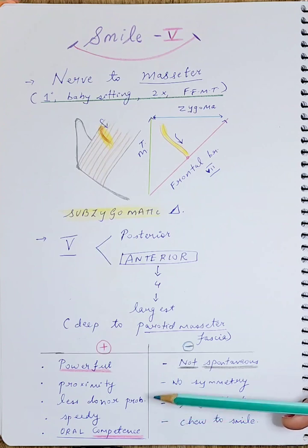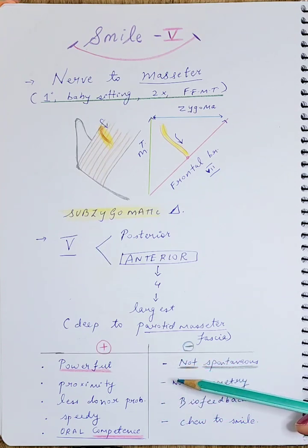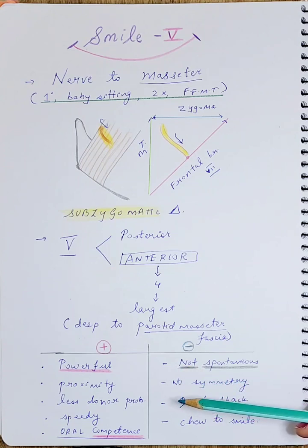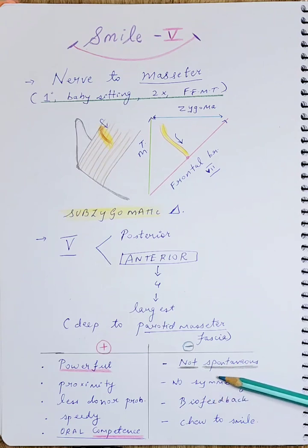Disadvantages are that the smile is not spontaneous. Since this is originally supplying a muscle of mastication (the muscle of chewing), it does not act when the opposite side - the normal side of the facial muscles - initiates a smile. So it is not spontaneous and therefore there is no symmetry.